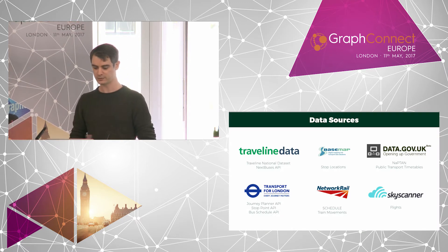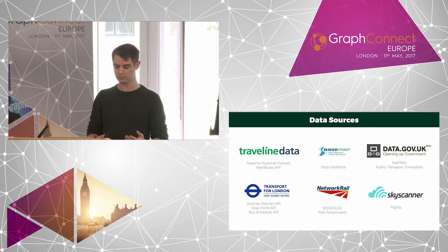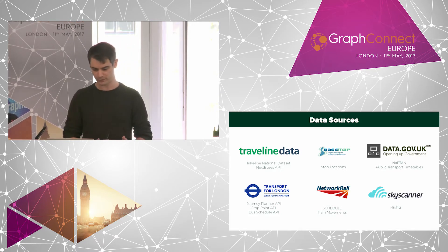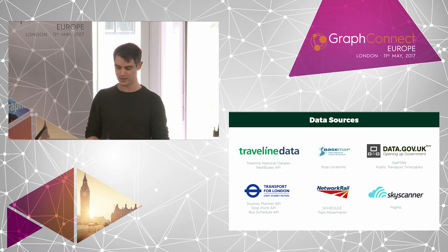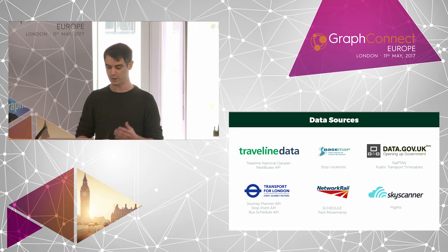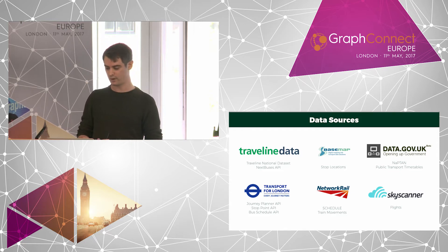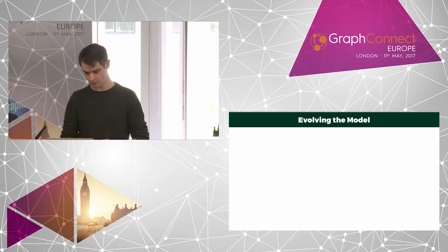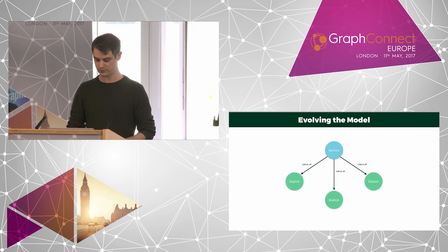In researching potential data sources, I found a wide range of information available on the internet, whether in REST, SOAP, or streaming APIs. My starting point was to work with train journeys, for which I needed two key pieces of information: stations and schedules. The government's NaPTAN dataset provides location data for all transport hubs in the UK in CSV format, which can easily be loaded into the database using Load CSV in Cypher. For scheduling information, Network Rail provides a schedule API covering all train operators across the country, and also a real-time train movements API — both in JSON format. My starting point was to create a model with train services connected to stations with a calls-at relationship.